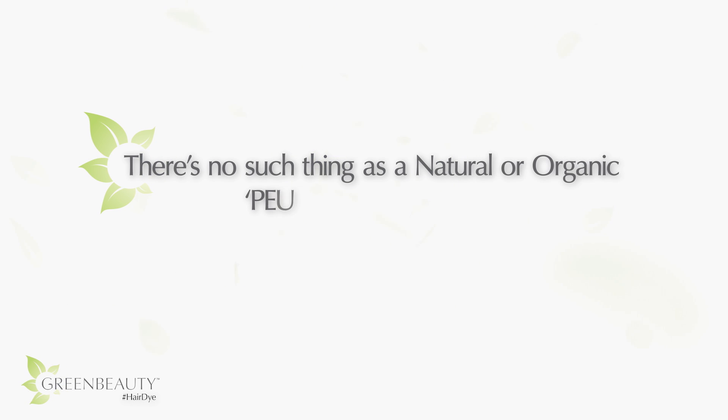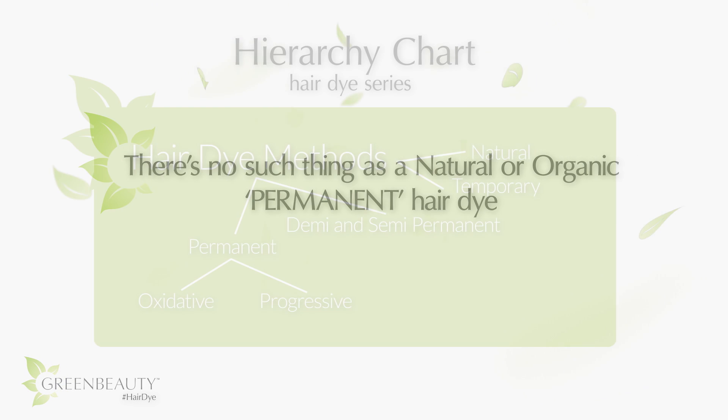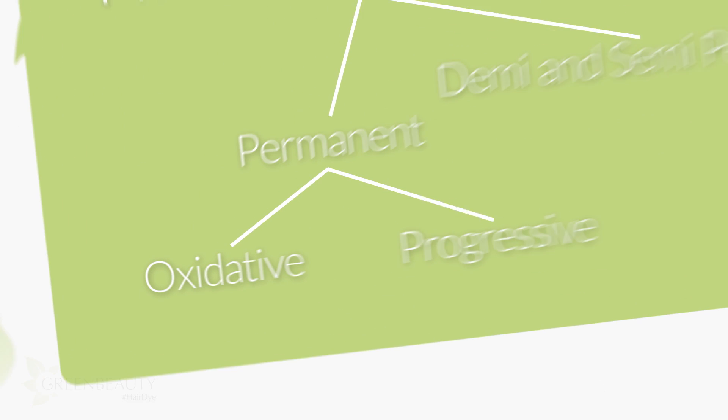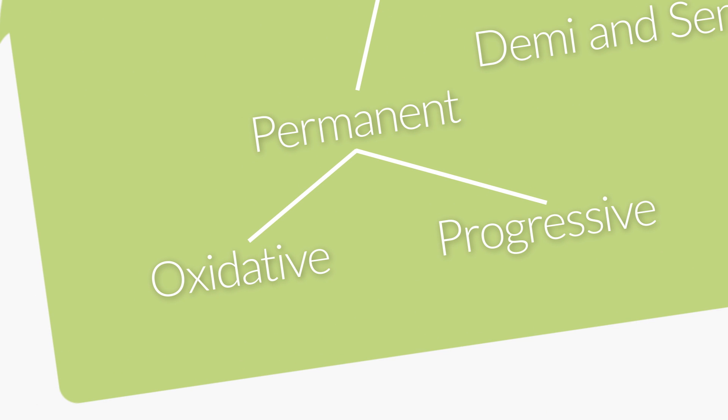First, I'm going to start by saying there's no such thing as a natural, organic, permanent hair dye. There's basically two different types of permanent hair color: oxidative hair dyes and progressive hair dyes.